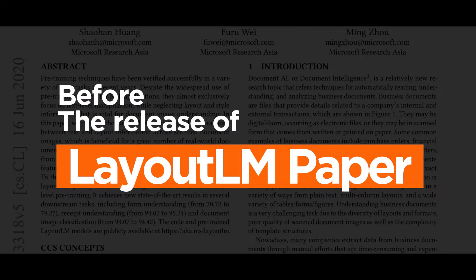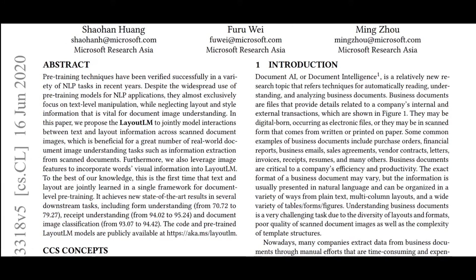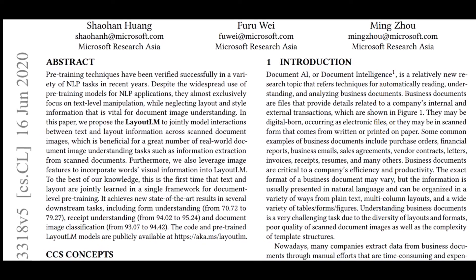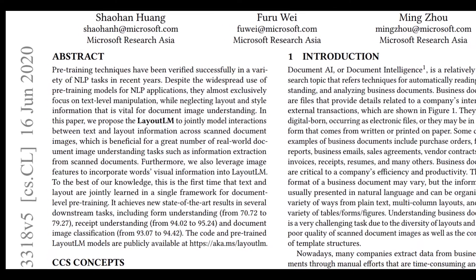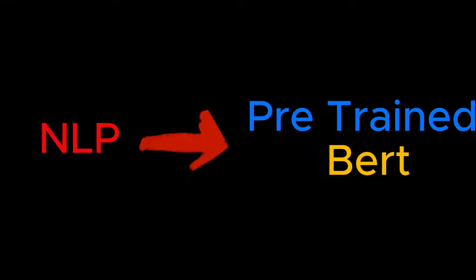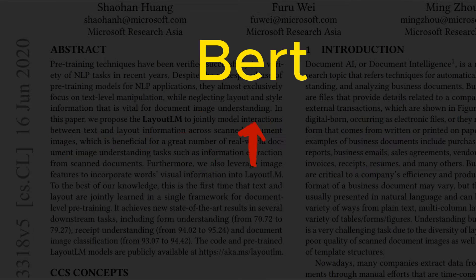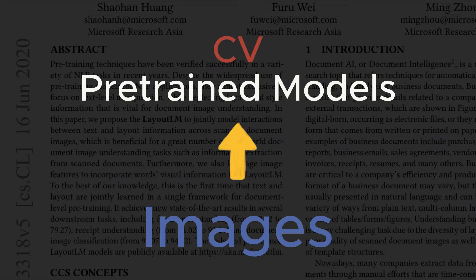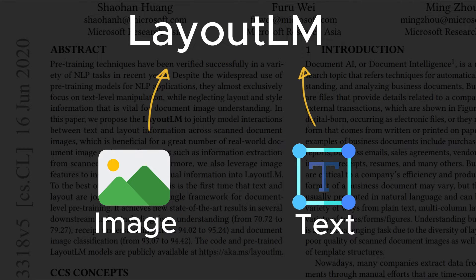Before the release of the LayoutLM paper, many pre-trained models had been built on NLP and computer vision. In NLP we have the BERT model, which only focuses on text as input, while other computer vision pre-trained models focus only on images. LayoutLM is the first model where it takes image, text, and 2D position as input — what we call multi-modality.